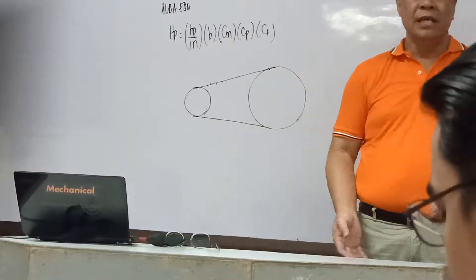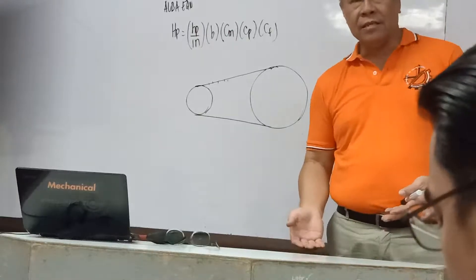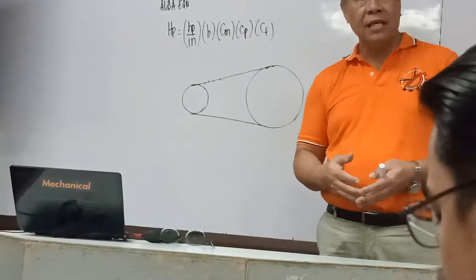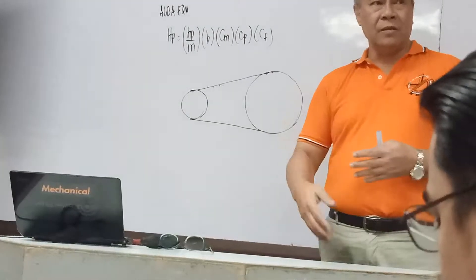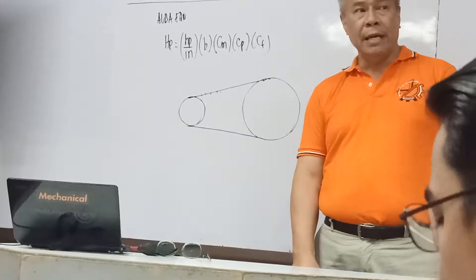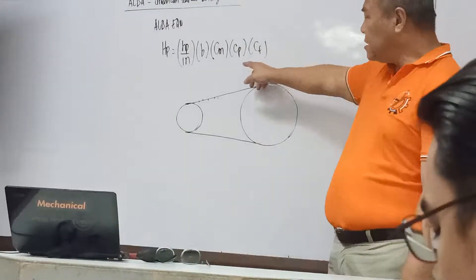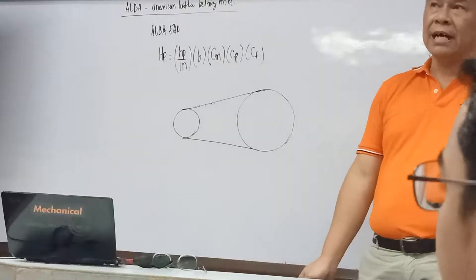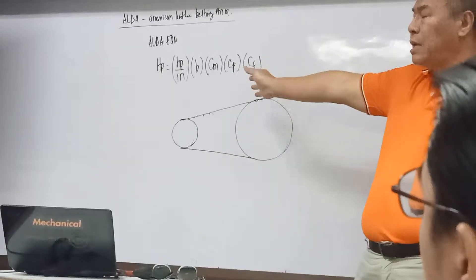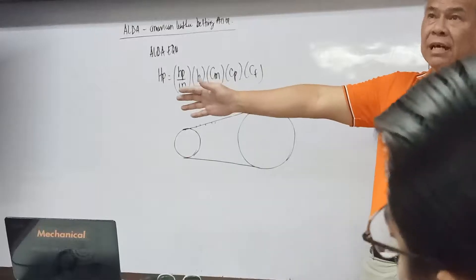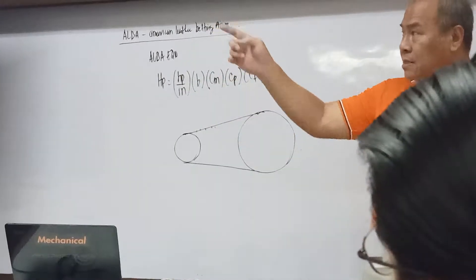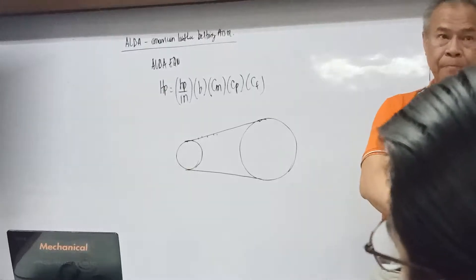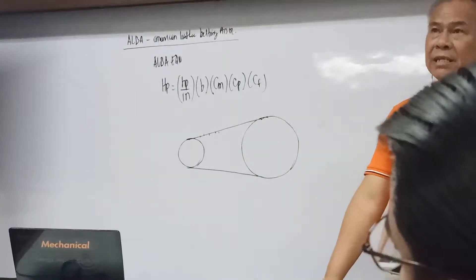By using this equation, we can easily compute the belt width we need — without using the general belt equation. The general belt equation is longer; we have to consider everything. But with the ALBA equation, it simplifies the process significantly.